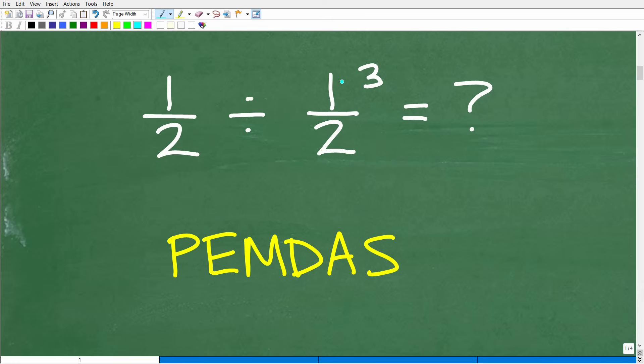I could be like, well, I have 1 half divided by 1 half. I could figure this out, get the answer to that, and then I can take that to the third power. So, I have two approaches I could take to do this problem. Obviously, one is right and one is wrong. So, we need to really understand the order of operations.